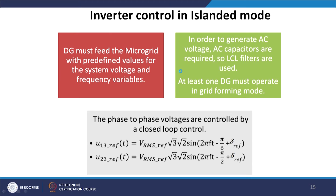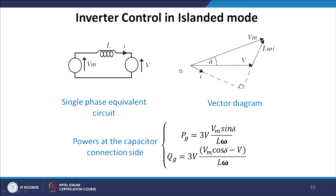For inverter control in islanded mode, the distributed generator in PQ mode must feed the microgrid with predefined values for the system voltage and frequency variables. In order to generate AC voltage, AC capacitors are required, so LCL filters are commonly used. At least one distributed generator must operate in grid forming mode. Looking at the single-phase equivalent circuit and vector diagram — showing voltage lagging with its phase drop and the final voltage — the real and reactive power at a capacitor-connected site can be obtained using the respective expressions.